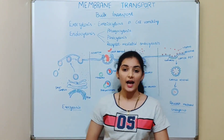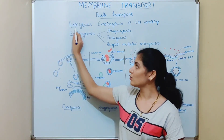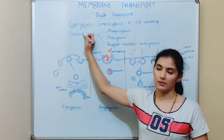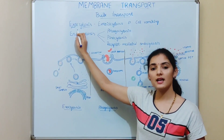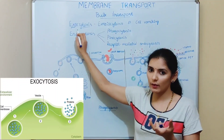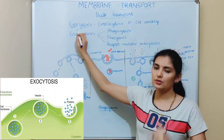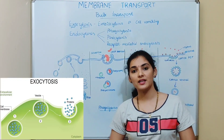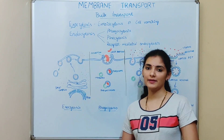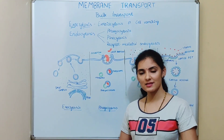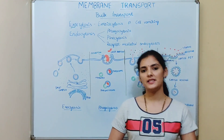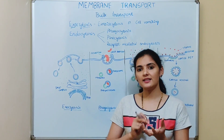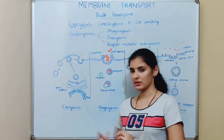First, exocytosis. Exo means outside, and cytosis means transport mechanism. So exocytosis means transport of substances in a bulk quantity from inside to outside of the cell. What kind of material is transported via exocytosis? Mainly waste material and cellular secretions — waste material produced inside the cell is expelled out via exocytosis.